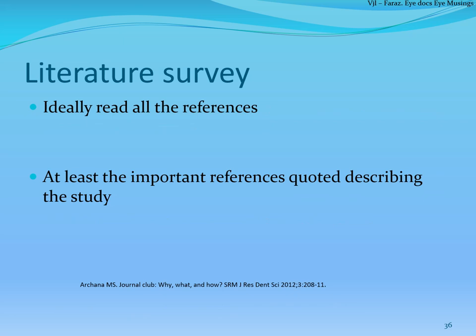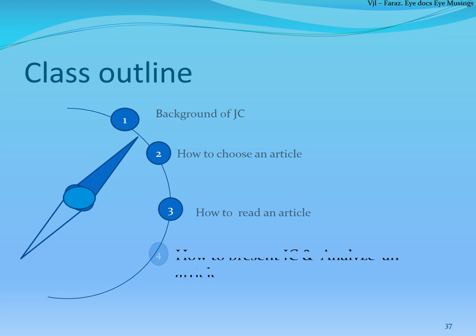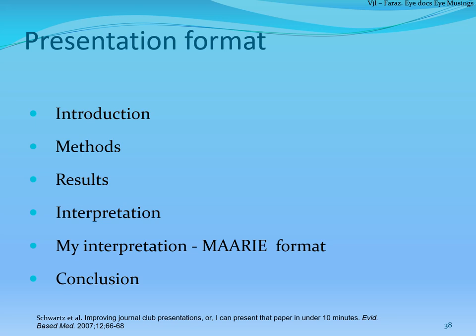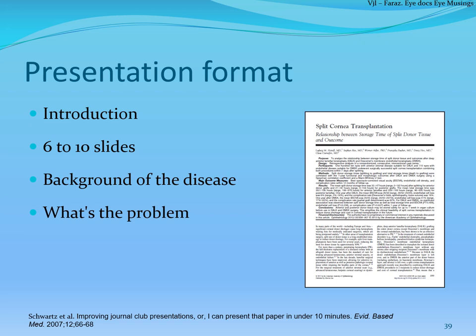The next important thing is a literature survey. It's ideal to read all the references but at least read the abstracts so you know which article to read in full. Now let's discuss how to present your JC. There are various methods, but here is an easy way that also makes interpretation very easy. You will start by giving an introduction to the topic — for example, using the split cornea transplantation study, you can introduce corneal blindness and methods to treat it such as PK and DALK.